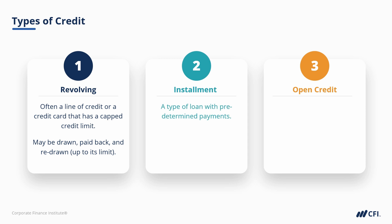Then there's an installment loan, which does have a predetermined payment schedule. These loans are often given for a specific period of time — for example, a 30-year mortgage or a 5-year car loan. For a commercial borrower, these might be a 5-, 6-, or 7-year equipment loan. These types of loans are often called reducing or amortizing, since the principal outstanding reduces with each repayment.